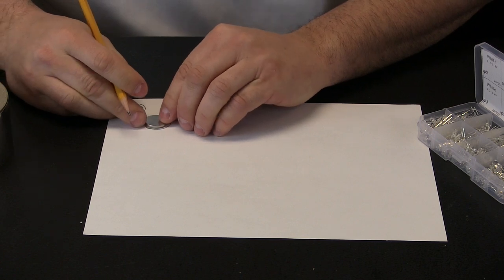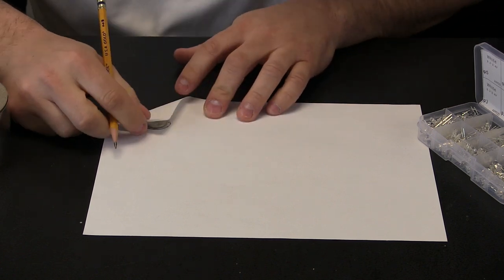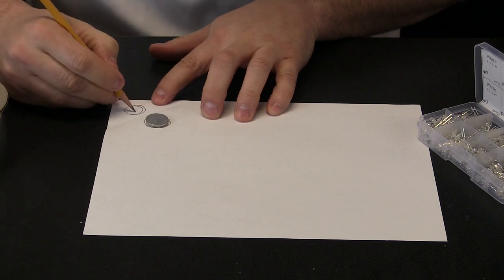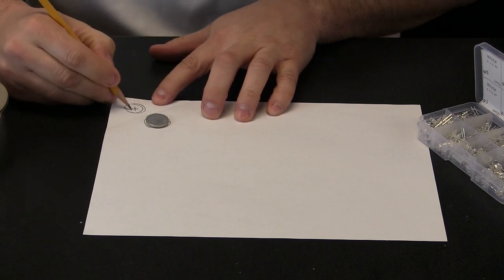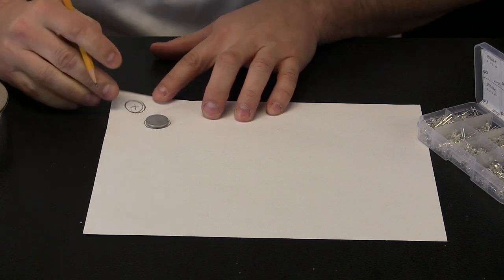I want the bottom to be the negative side. That is where that part of the battery sits. And when I fold the top down the top is going to be hitting the positive side. So I am going to put a positive sign there. Two sides of my battery.